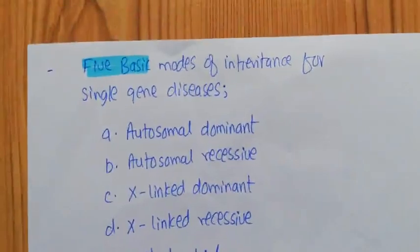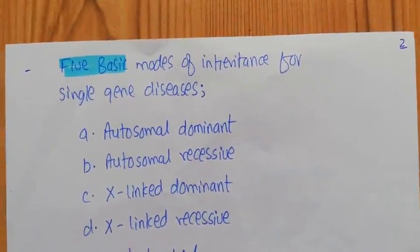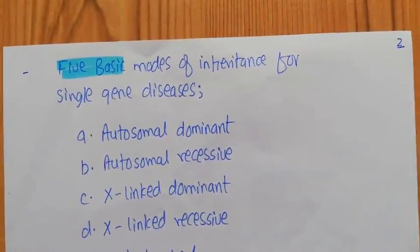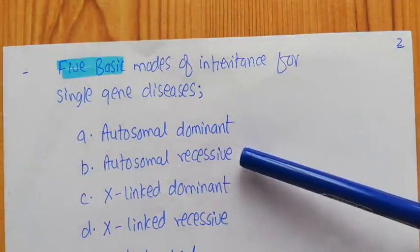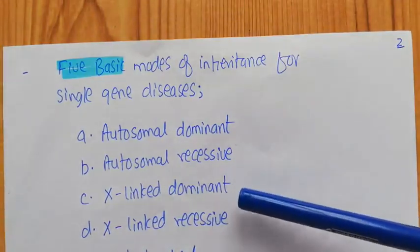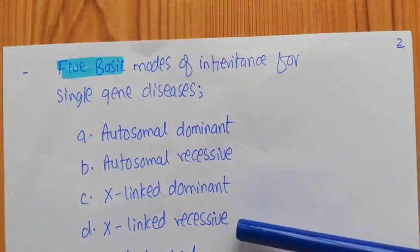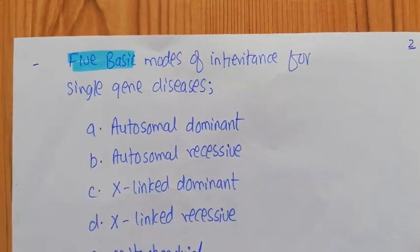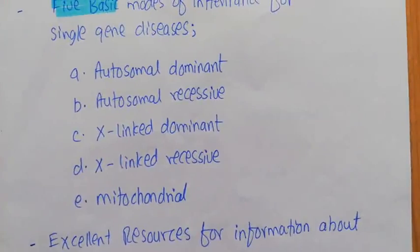When you talk about the mode of inheritance of single gene diseases, you can classify them into five basic modes. The first is autosomal dominant, the second is autosomal recessive, the third is X-linked dominant, the fourth is X-linked recessive, and the fifth is mitochondrial. Let me briefly explain what these terms mean.